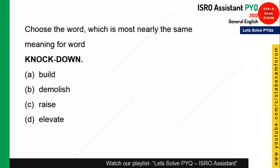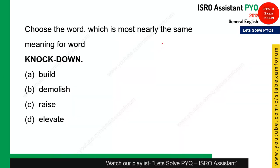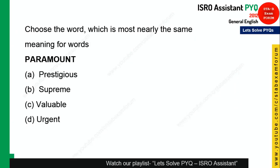The first question is: choose the word which is nearly the same in meaning for the word given. They are asking for synonyms. The word is 'knockdown'. As you know, knockdown means to demolish — if you are knocking down something, you are demolishing it. The antonym for knockdown would be 'build'.